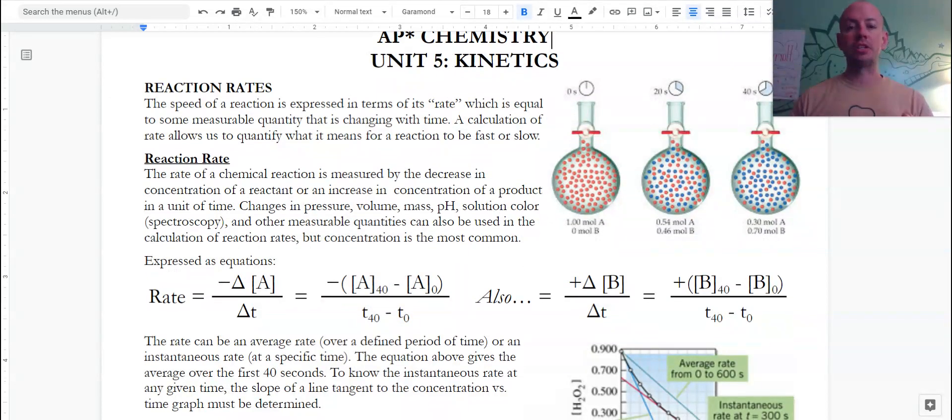So when we look at reaction rate, it is measured as a decrease in concentration of a reactant or an increase in concentration of a product per unit time. We can also think about it in terms of pressure, volume, mass, sometimes pH, or even the color of a solution. But we're really focusing on the amount per volume or concentration over time.